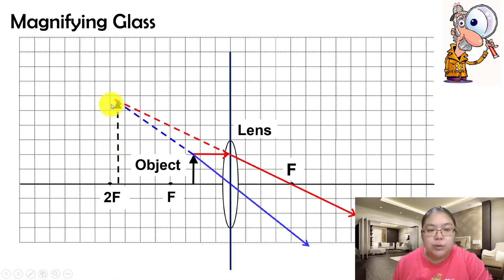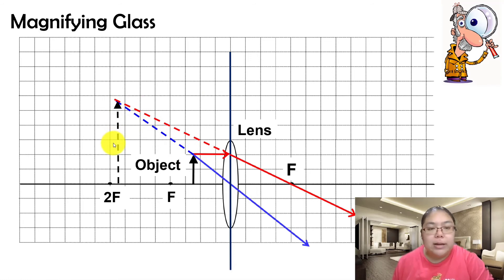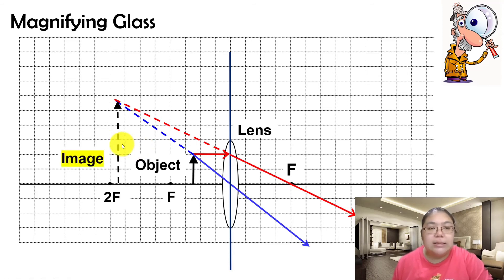This is a virtual image. Comparing both sides, the head of the object is at the top and the head of the image is also at the top — so this is upright, not inverted. Finally, comparing the size, the image is magnified.